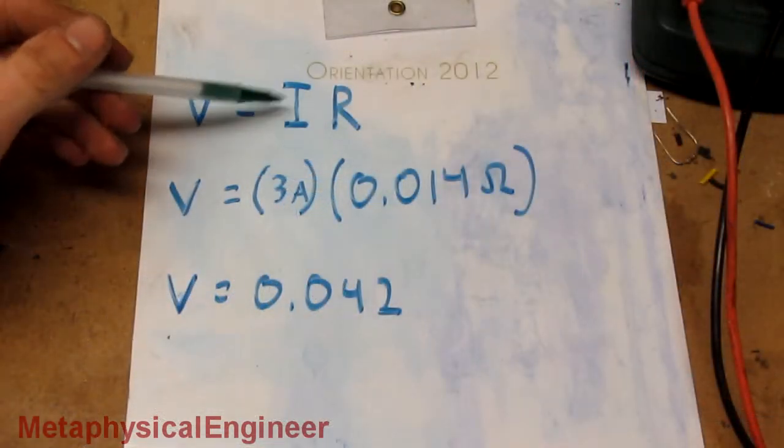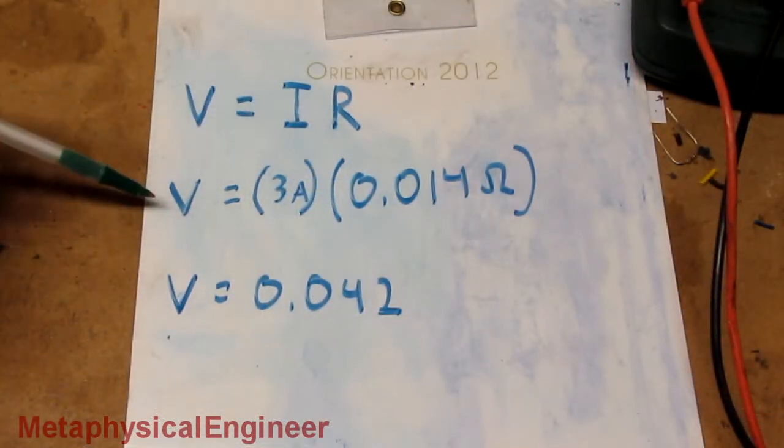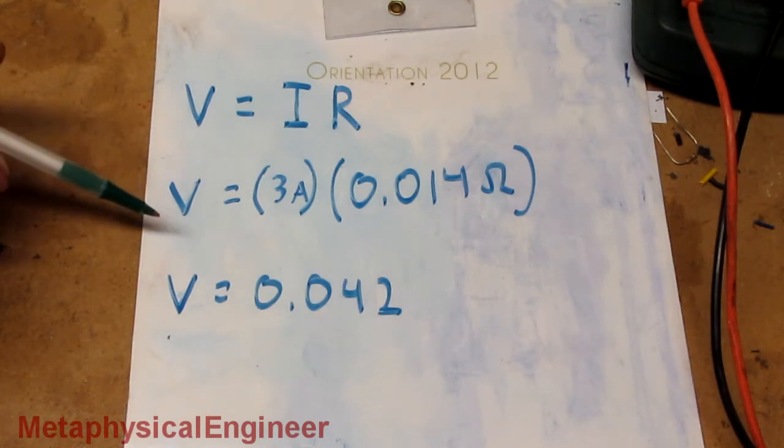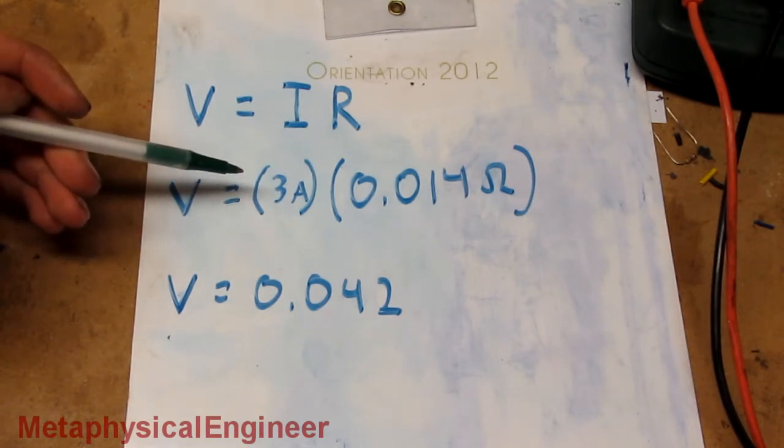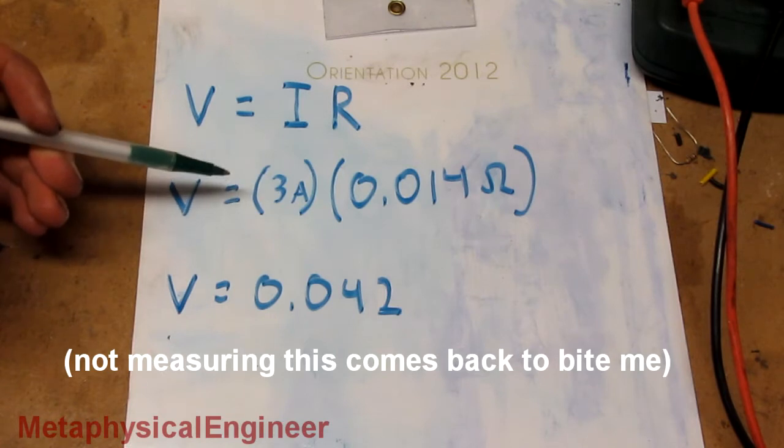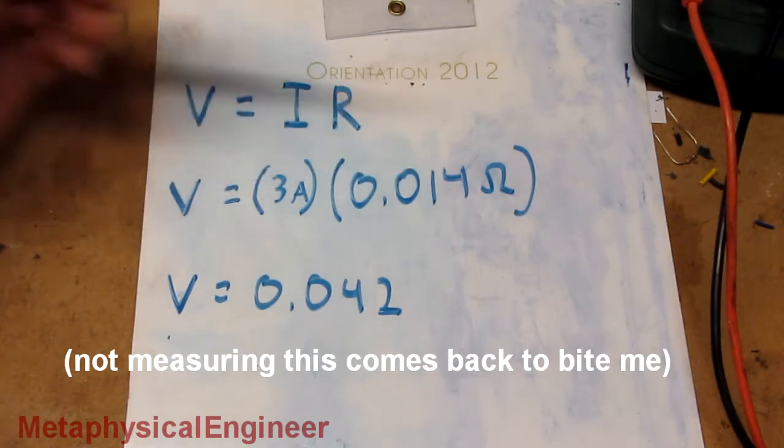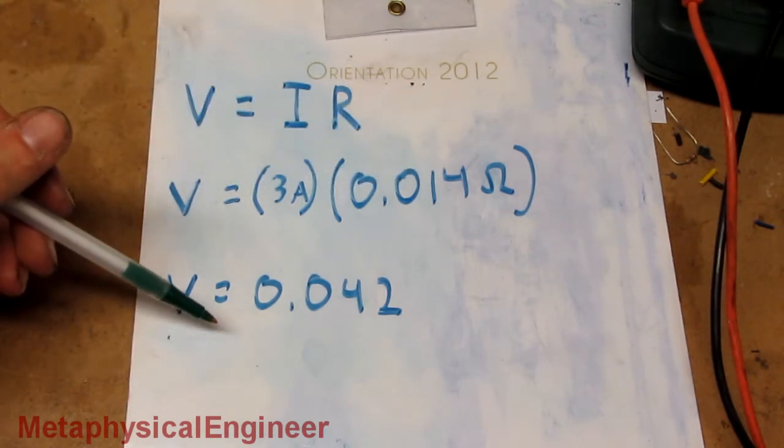Voltage equals current multiplied by resistance. This is the voltage that the circuit looks to detect to determine that the incandescent bulbs are both functioning. In this case, it's probably looking for around more than 3 amps. Multiply that by 0.014 ohms, and we get 0.042 volts.